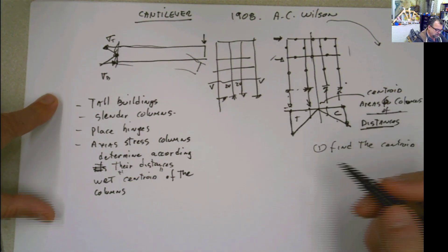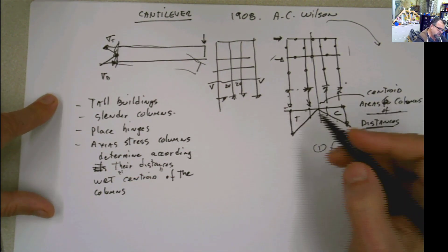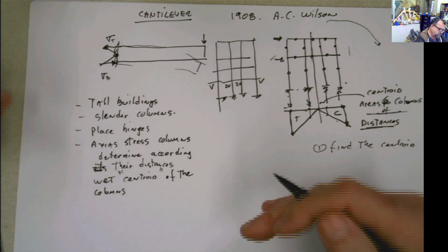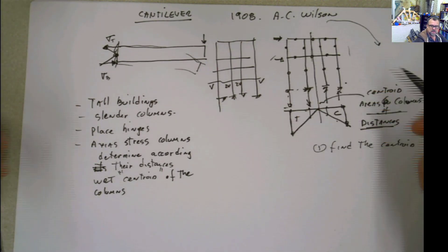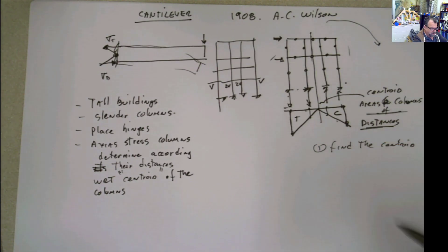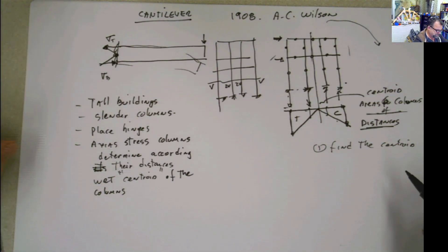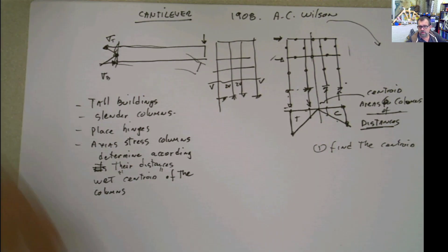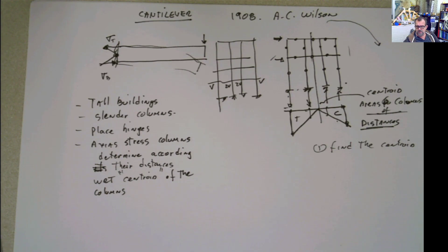The centroid of the columns — the overall centroid of the columns. That's basically the method. And then once we do that, we start cutting it in pieces like we did the rest, and we start moving and finding all our unknowns. So I'm going to do a problem that hopefully is going to illustrate this method. I'm going to do the same problem that I did with the method of the portal, and now I'm going to work it out using the method of cantilever.